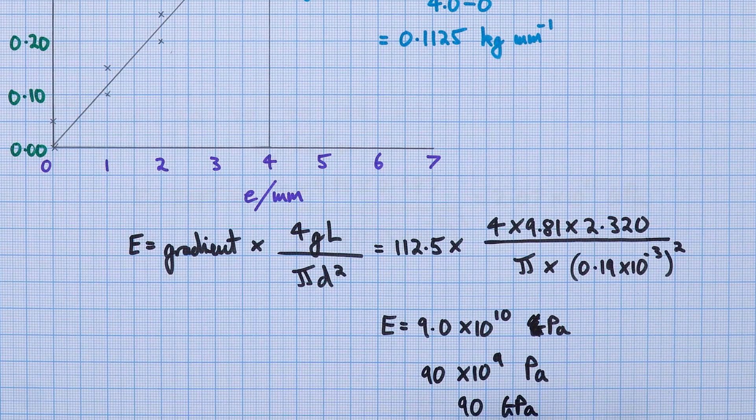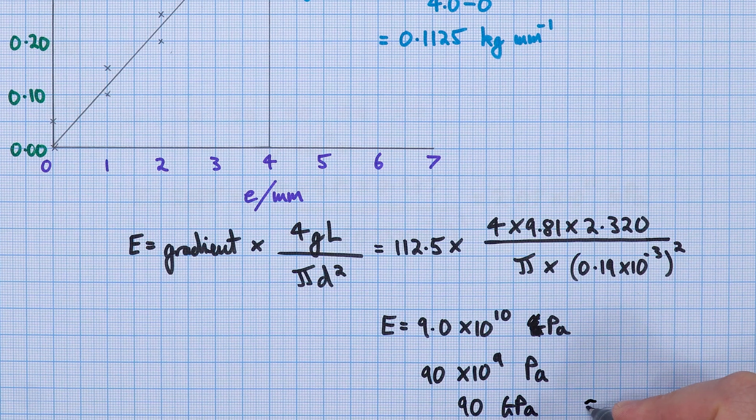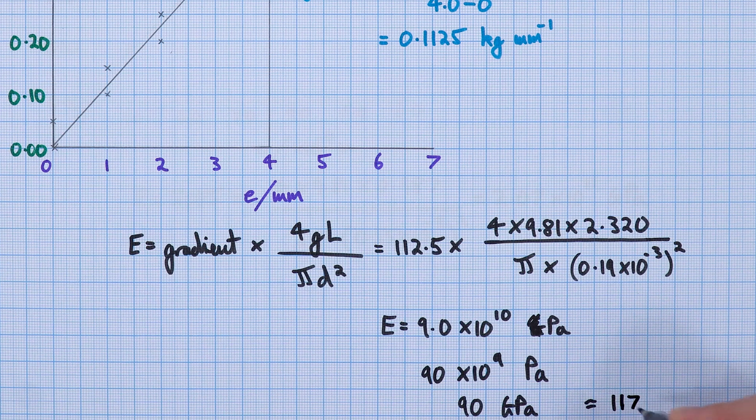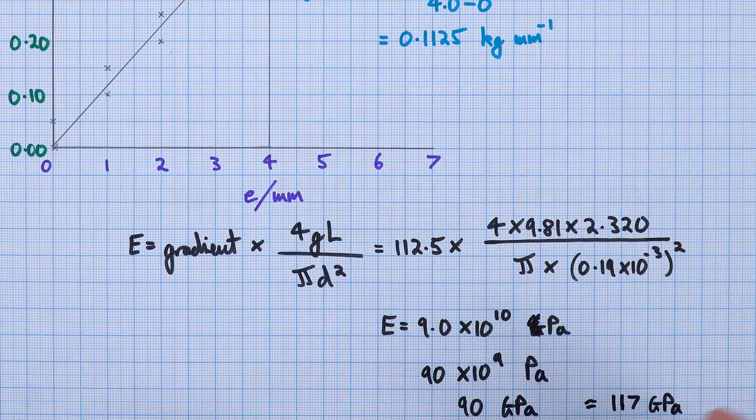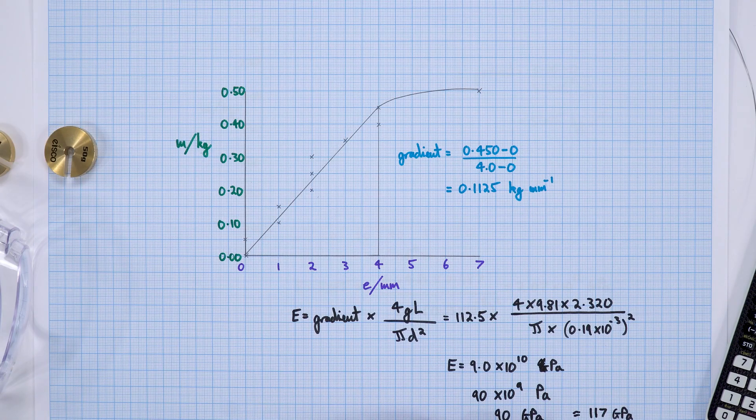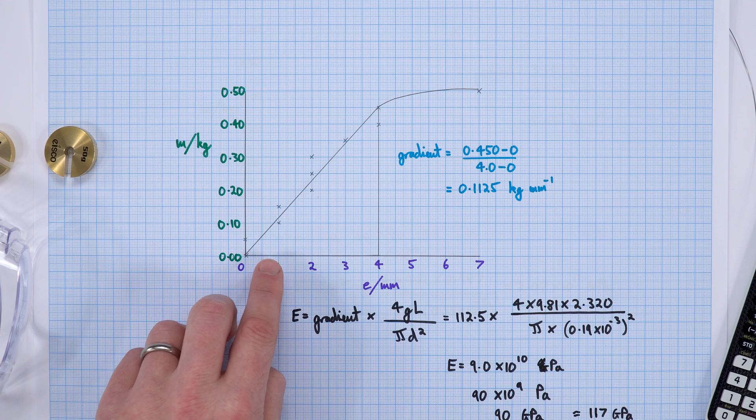That's not particularly close to the real value—it tends to be somewhere between 110-120, maybe 117 is a figure I've seen quite a bit. That figure isn't exactly that, but it's in the same order of magnitude. The reason it might not be that close is because we have large percentage uncertainties in our values for the extension.